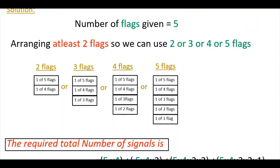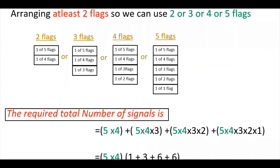Then you add all those numbers. For two flags: any of the five flags go in the first box, and the remaining four go in the second, giving 5 × 4. For three flags: 5 × 4 × 3. For four flags: 5 × 4 × 3 × 2. For five flags: 5 × 4 × 3 × 2 × 1. So the total is 5×4 + 5×4×3 + 5×4×3×2 + 5×4×3×2×1.